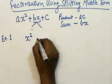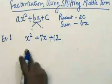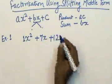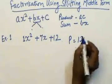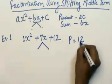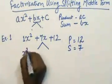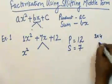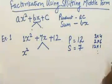Let's take an example: x² + 7x + 12. The coefficient of x² is 1, so AC is 12. I want to split 7x into two parts such that their product is 12 and their sum is 7. The factors of 12 are: 3×4, 2×6, 12×1, and so on.